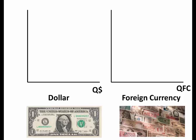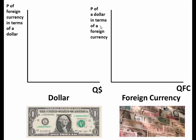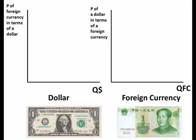The tougher part is indicating what is on the y-axis. On the y-axis for the dollar graph, you show the price of the foreign currency in terms of a dollar. On the y-axis for the foreign currency graph, you show the price of a dollar in terms of that foreign currency.